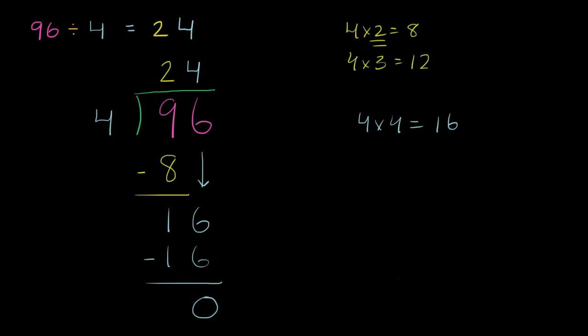And then 4 goes into 16 four times. So really, a lot of this is just saying, we first figured out that we could go 20 times, and then we said, that doesn't get us all the way to 96. We have to go another 4 times. Hopefully that helps.